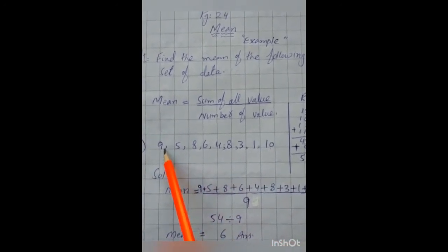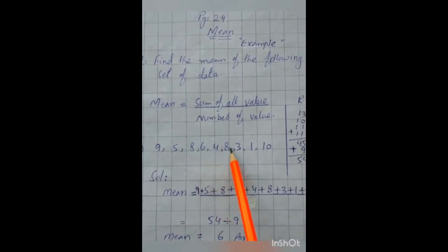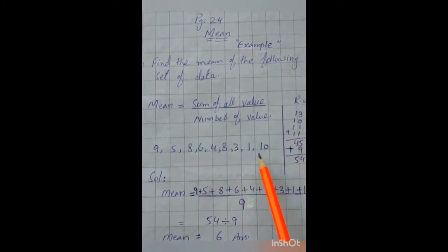How many these are? 1, 2, 3, 4, 5, 6, 7, 8, 9. First, we will add them.